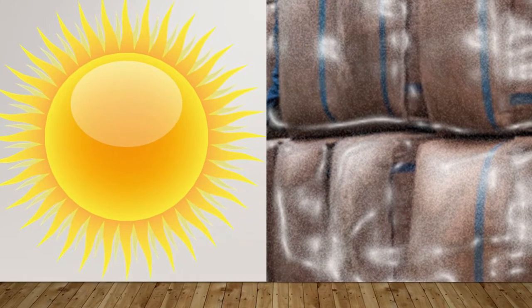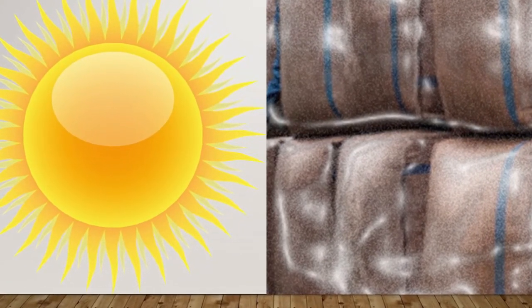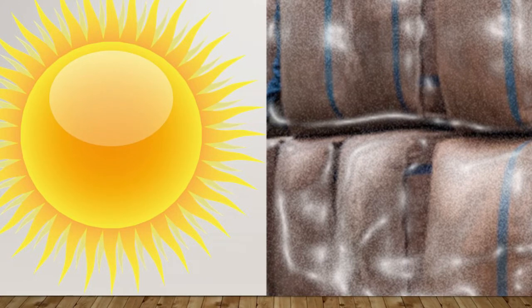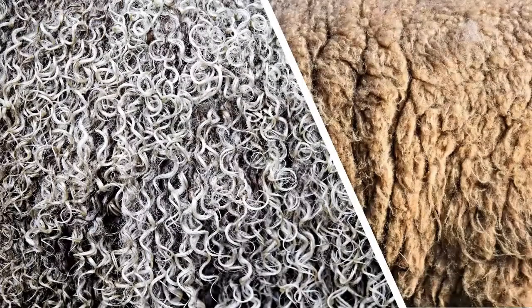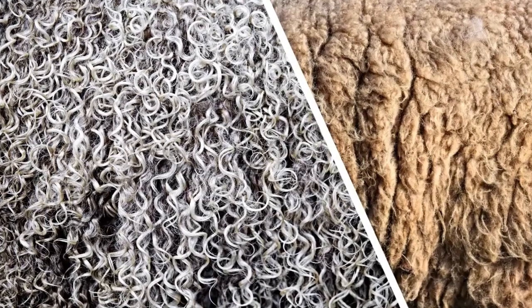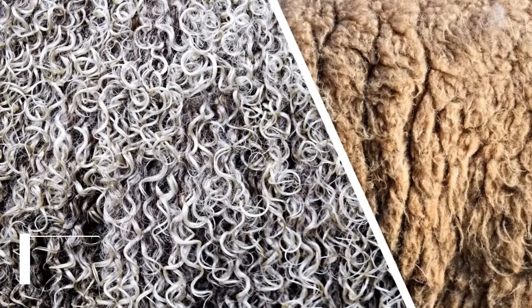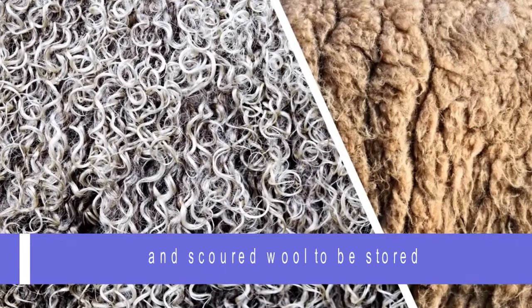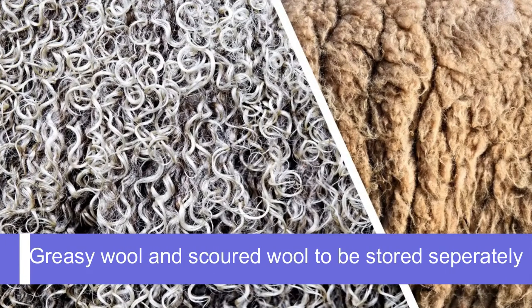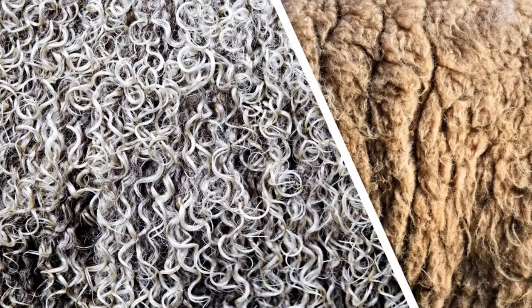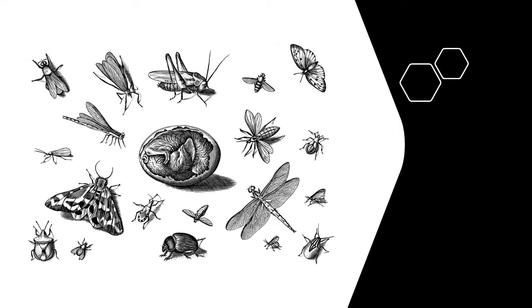Bales must be stored and transported at the right temperature. If the temperature is too hot, the mohair and wool will be damaged. Wool grease is a wax or viscous brown liquid with a melting point of 34 degrees Celsius, which can contaminate other goods. So do not stow greasy wool together with scoured wool. Another issue to consider is that insects could infest wool before or during transportation.